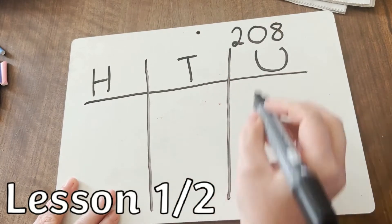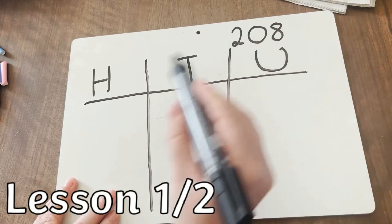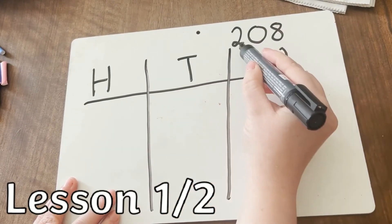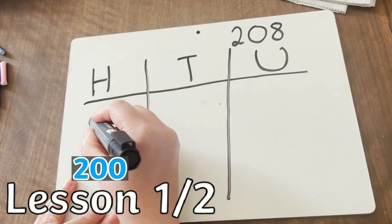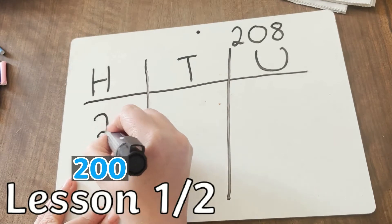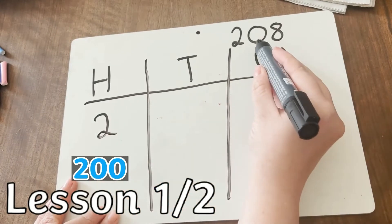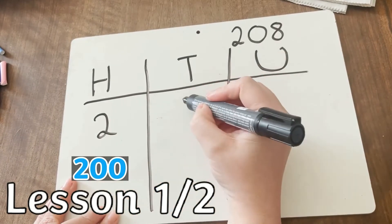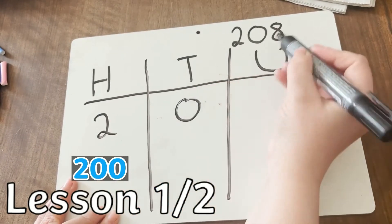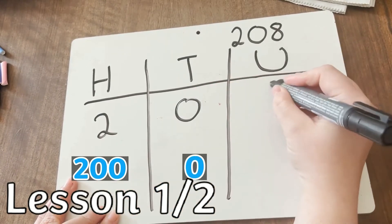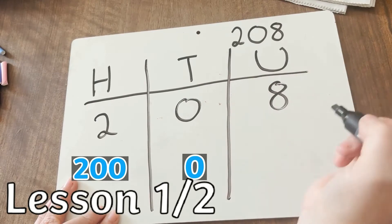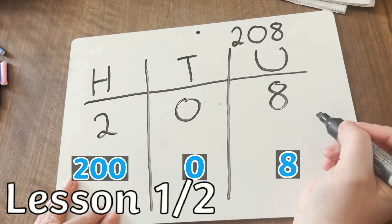And even using a place value chart. So how many hundreds are there? Two — so two goes in that column. How many tens? Well, there aren't any, there's just zero. And how many units? There's eight, which makes 208.